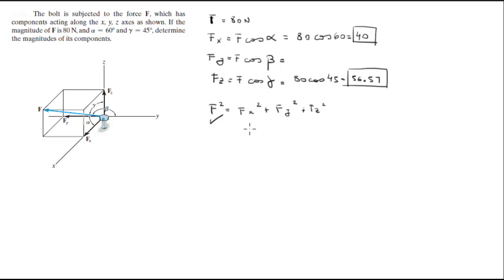We got F, we got X, we got Z. We're just missing Y, so when you plug the numbers in: 80 squared equals 40 squared plus F_Y squared plus 56.57 squared, where you find that F_Y equals 40 newtons.